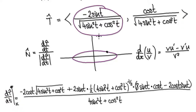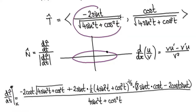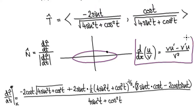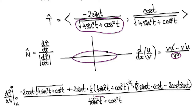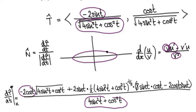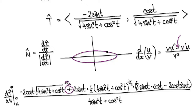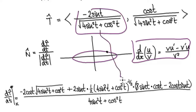So looking at just the x-component, we now need to differentiate this. Let's use the quotient rule. The quotient rule: you square the denominator, when you square this it will give you this. Then leave v alone, differentiate u — this is your u here, if you differentiate this it will give you this. Leave v alone — this is your v here. Then you subtract. Use the quotient rule, differentiate it, and that will give you this thing here.